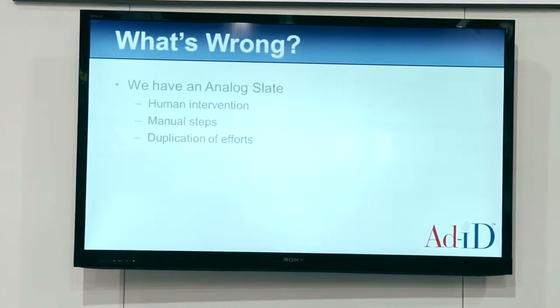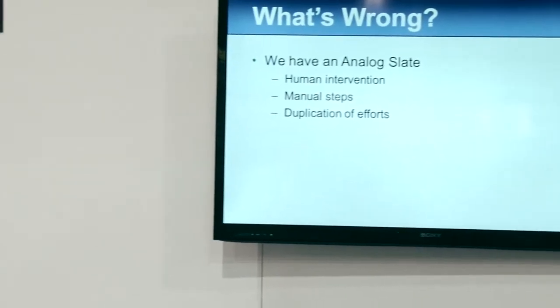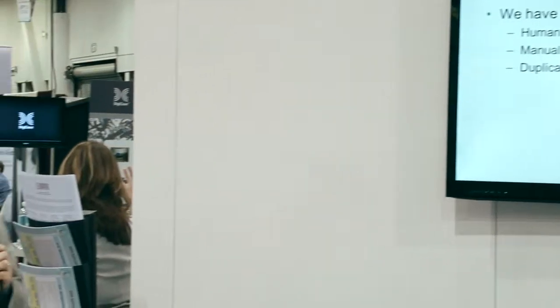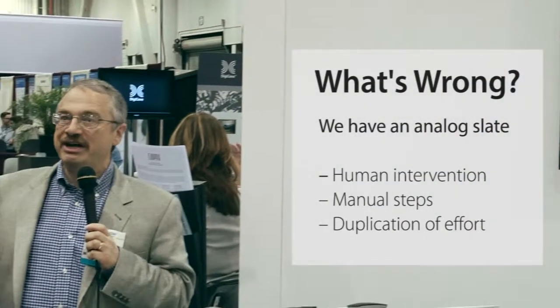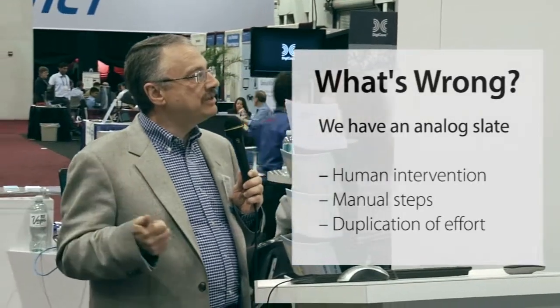So what's wrong? We have an analog commercial slate. It needs human intervention, manual steps, and lots of duplication of effort. The ad industry actually created something called Ad ID. However, it's got suboptimal use — 37% of video ads, 10% of audio ads, and 10% of ads across all media utilize Ad ID today. We've got to grow that.